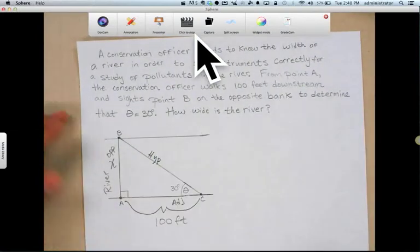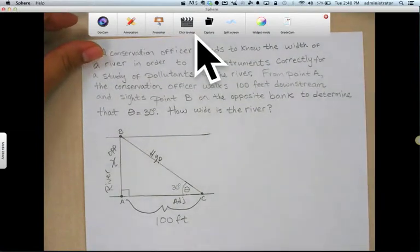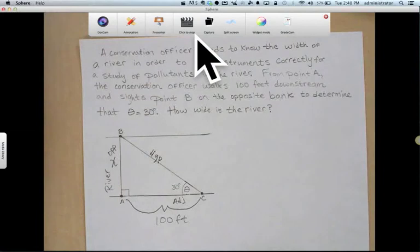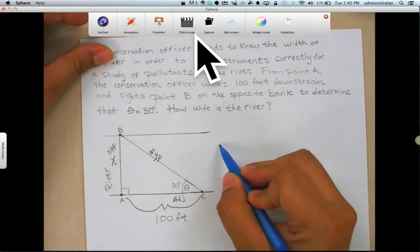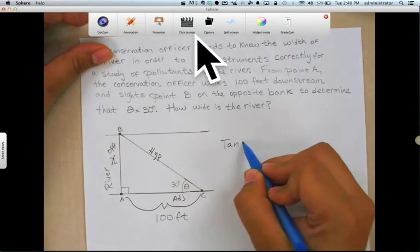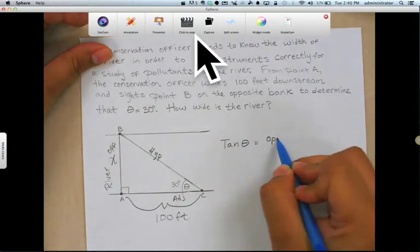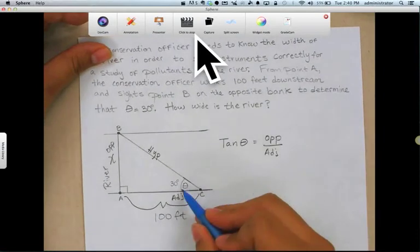So we're looking for the opposite side and we know the adjacent side. Opposite, adjacent. So SOHCAHTOA. TOA, the tangent. I'm going to have to use the tangent of theta. So let's write that down here. The tangent of theta equals the opposite over the adjacent.